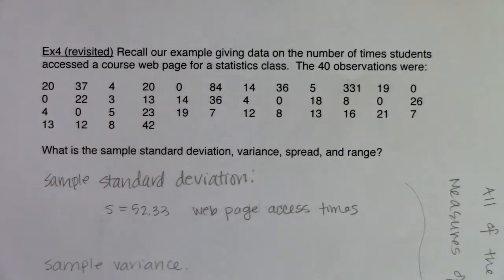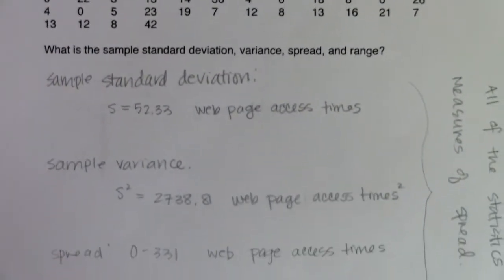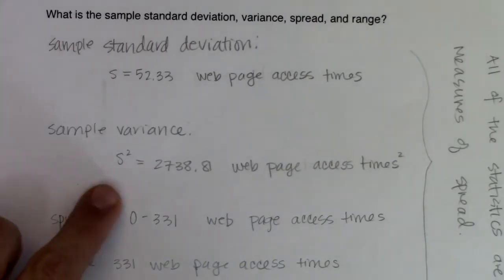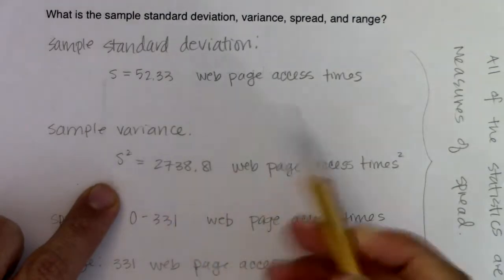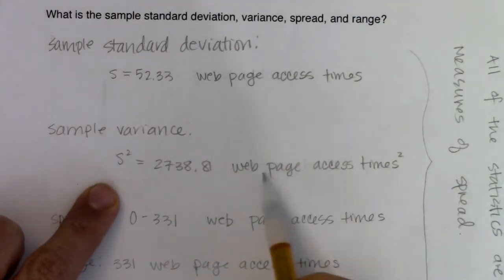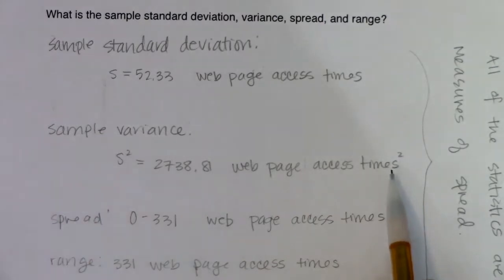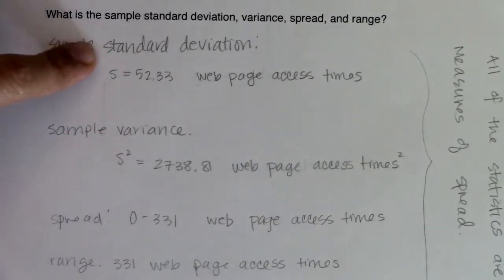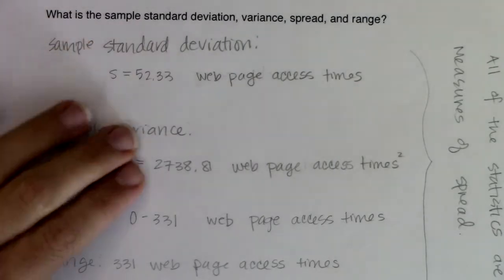If we look at the variance, when we take a look at the sample variance, you see the symbol is s squared, and you see technically the units are web page access times squared. It's just whenever it comes to variances, the units don't make sense, so we tend to not write them. Because ultimately they aren't important. The only reason we have sample variance was so that we could get to sample standard deviation.